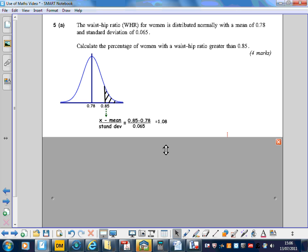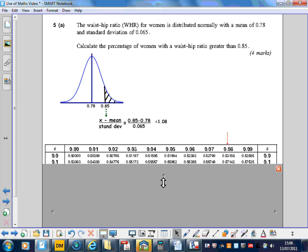Now, as usual, we standardize by doing our value minus the mean over the standard deviation, so in this case 0.85 minus 0.78 over the standard deviation of 0.065. That gives us a value of 1.08, and we've now got to look that up on the normal table.